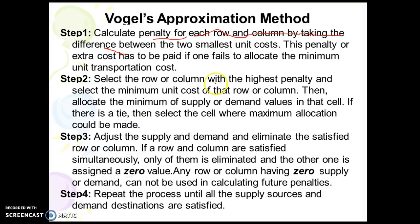We select the row or column with the highest penalty and choose the minimum unit cost cell in that row or column. We allocate the minimum of supply or demand values in that cell. If there is a tie, select the cell where the maximum allocation can be made. Then adjust the supply and demand and eliminate the satisfied row or column. If a row and column are satisfied simultaneously, only one is eliminated and the other is assigned a zero value.